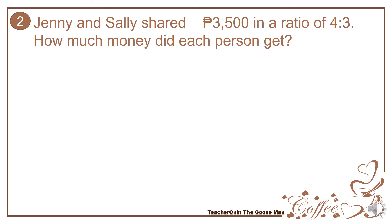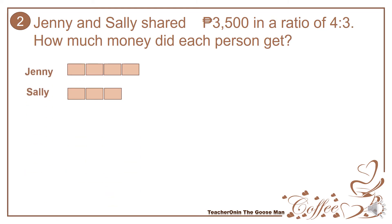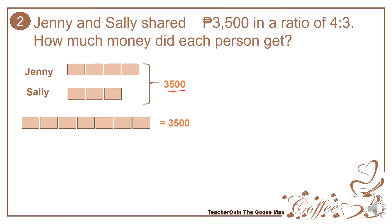Let's have another example. Jenny and Sally shared 3,500 in the ratio of 4 to 3. How much money did each person get? We will represent 4 parts for Jenny and 3 parts for Sally. But take note that I have 3,500 in all, meaning to say the total number of parts here is actually 7 parts, and the total is 3,500. So 7 parts is the same as 3,500.